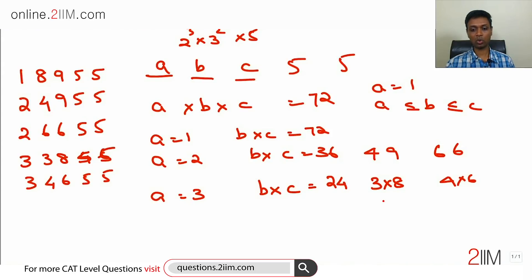Let's go to A equal to 4. B times C has to be 18. 3 times 6 or 2 times 9 are not possible because both numbers should be 4 or higher. 4 cubed is 64. So with one 4 already thrown in, other numbers being 4 or more, we cannot have 18.